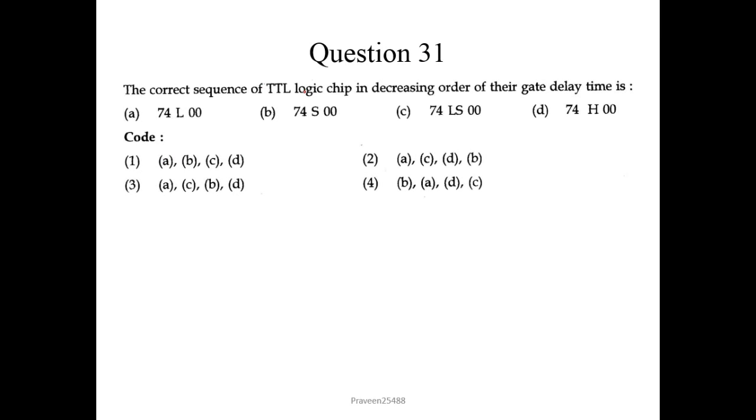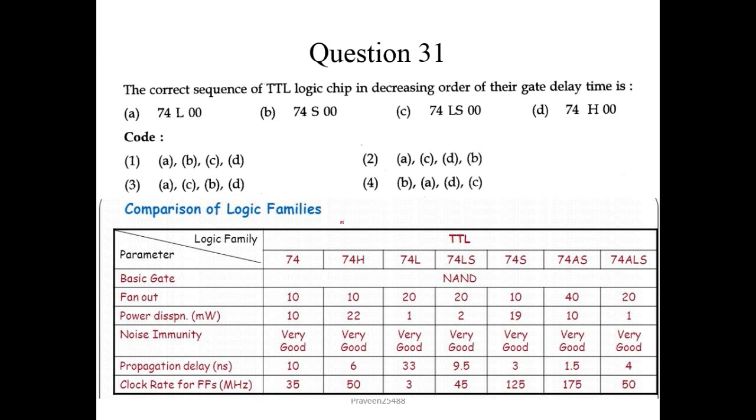Now question number 31. The correct sequence of TTL logic chip in decreasing order of their gate delay time. So here I would like to show you comparison of TTL logic families. So here 74L is for low power TTL and its propagation delay is 33 nanoseconds. And 74S is for Schottky TTL. And its propagation delay is 3 nanosecond. And for low power Schottky is 9.5. And this is high speed TTL logic. So it is 6 nanosecond. It is asking the decreasing order of their gate delay. So correct sequence would be ACDB. Second one would be the correct answer.